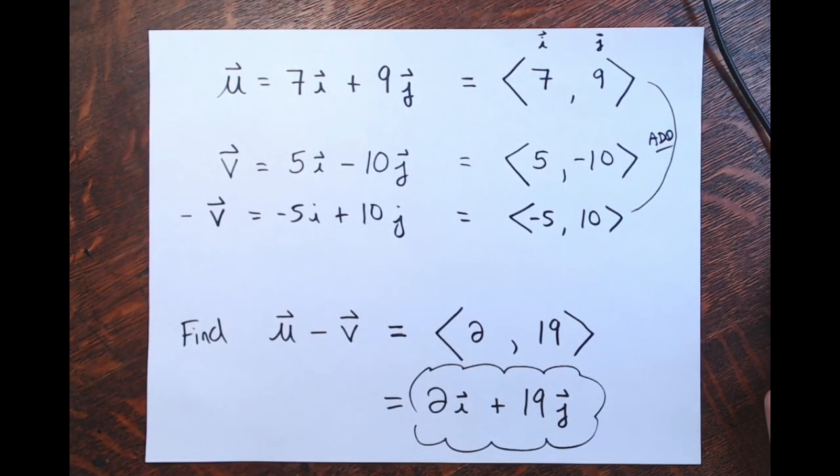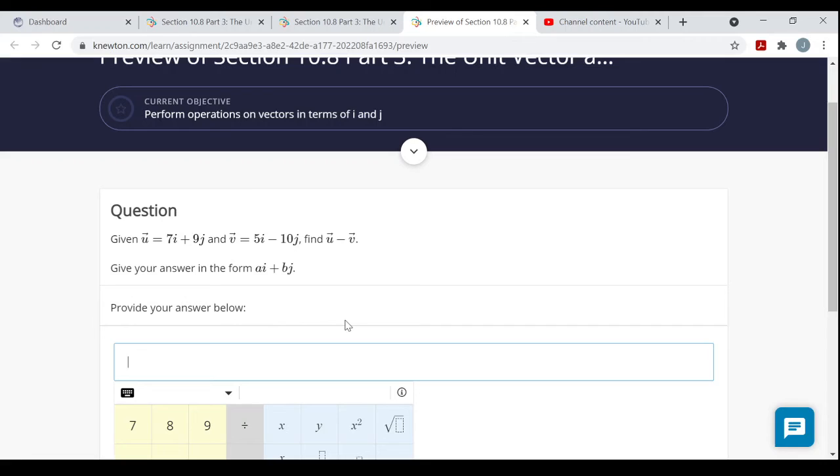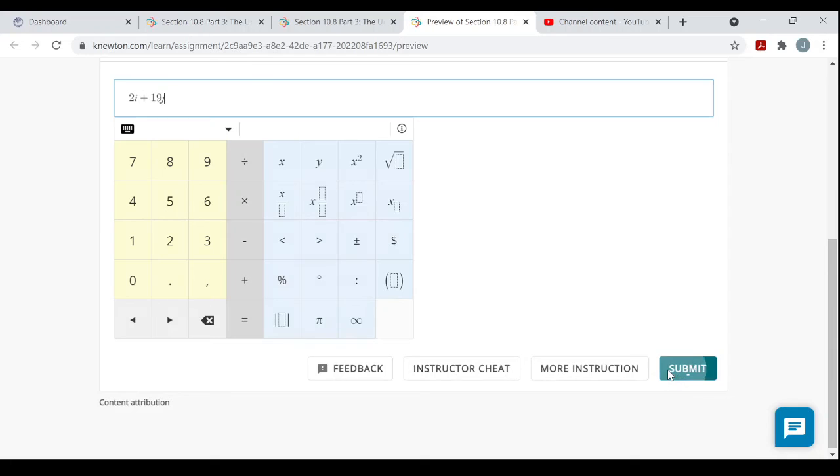Very simple. If you know how to do your vector addition and scalar multiplication from an earlier assignment, this shouldn't be that much of a stretch. You just have these i's and j's to worry about now. Remember, i just corresponds to the first component, j to the second component. So it's 2i plus 19j, and that's it. That's how they want us to enter it.